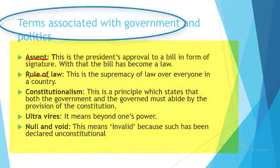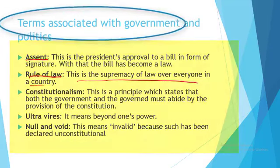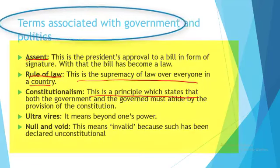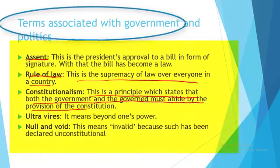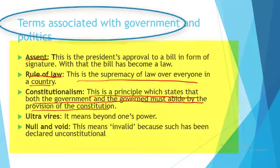Then we have rule of law. Rule of law is simply the supremacy of the law over everyone in a country. Then we have constitutionalism — a principle where the constitution is supreme over all. The activities of both citizens and the government are guided by provisions of the constitution; nobody acts outside the constitution.